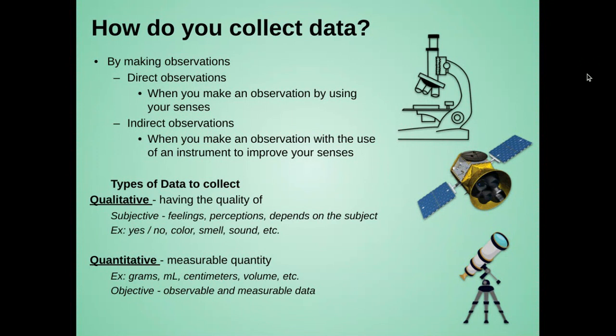Quantitative data is a measurable quantity. For example, grams, milliliters, centimeters, volume. This is an objective measurement. It's observable and measurable. And it remains the same throughout for everyone.